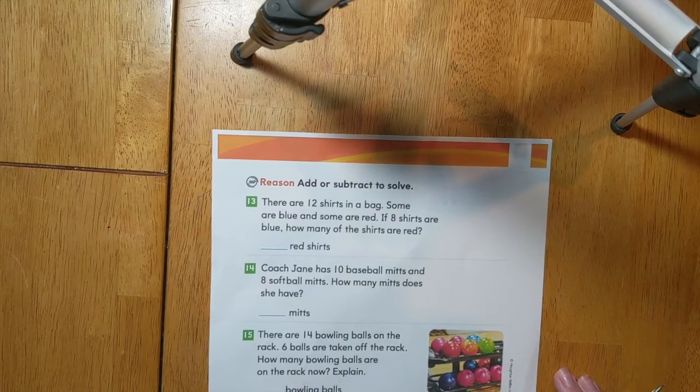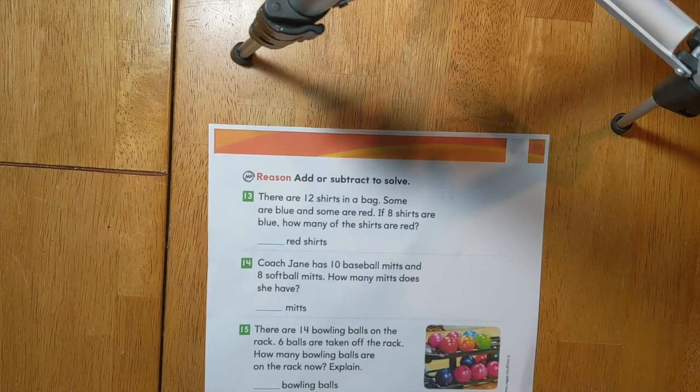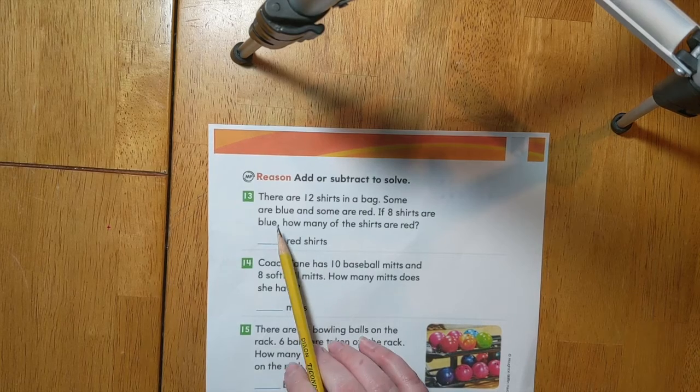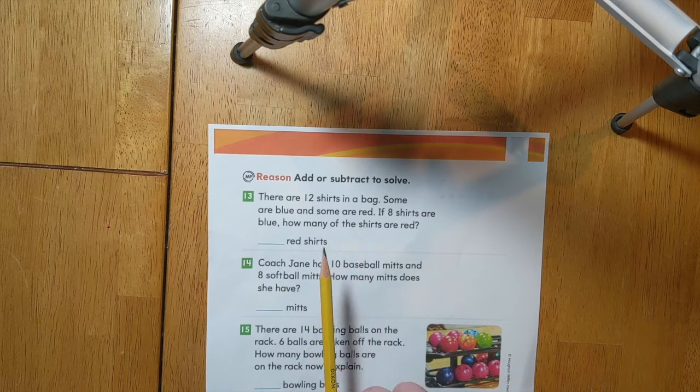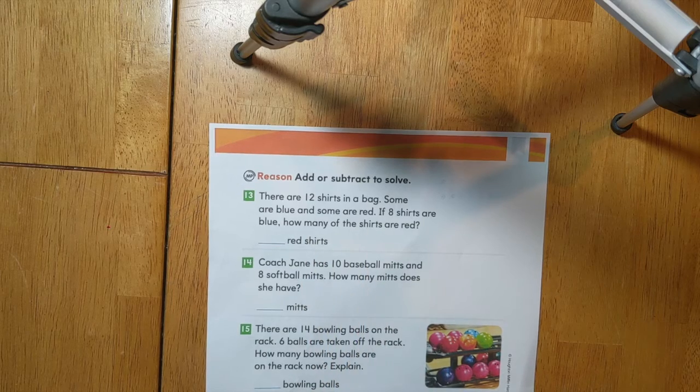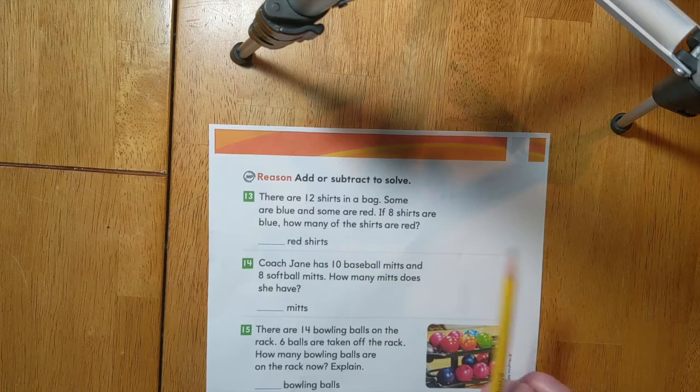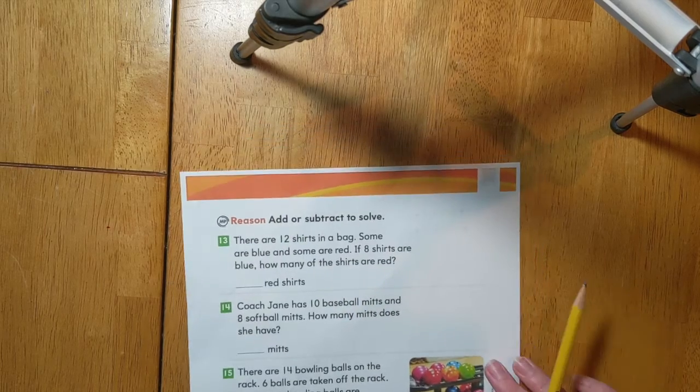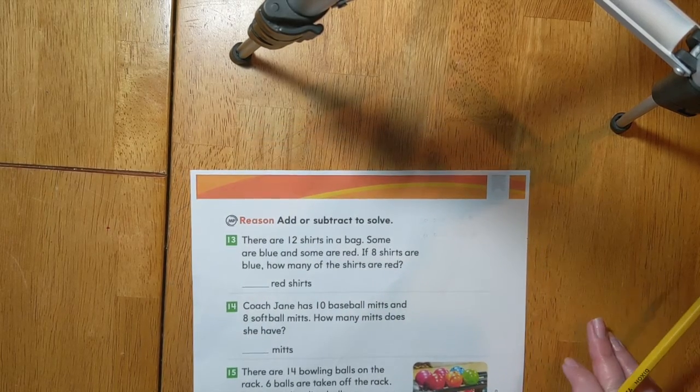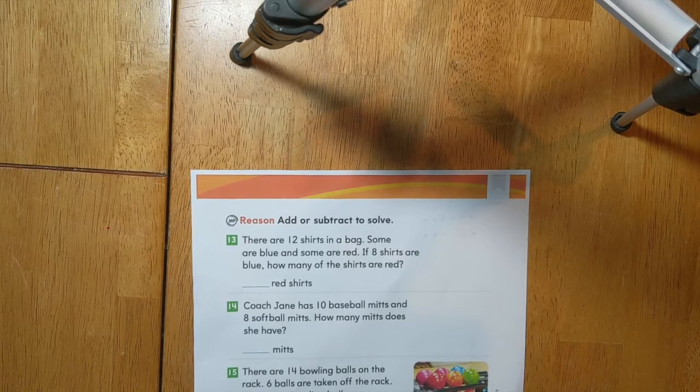For these problems we are going to add or subtract to solve. Let's start with number 13. There are 12 shirts in a bag. Some are blue and some are red. If eight shirts are blue, how many shirts are red? We can show this problem in two different ways. Let's start by showing it through subtraction.